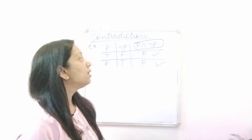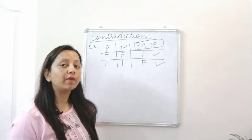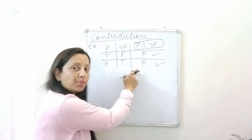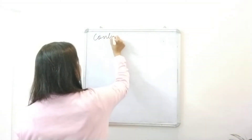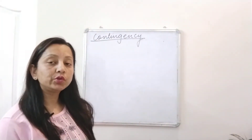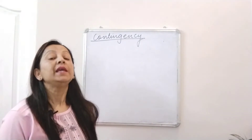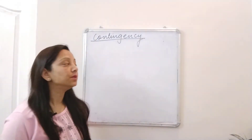There is not even a single true truth value in the truth table for this compound proposition. So this is a contradiction. Now if I talk of contingency — a contingency is a compound proposition which is sometimes true and sometimes false. It is neither completely true nor completely false.